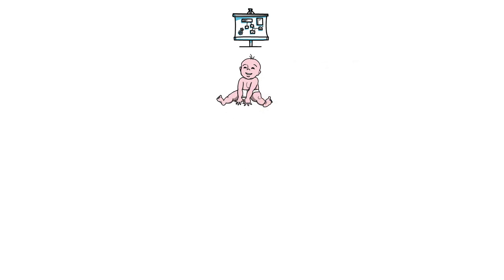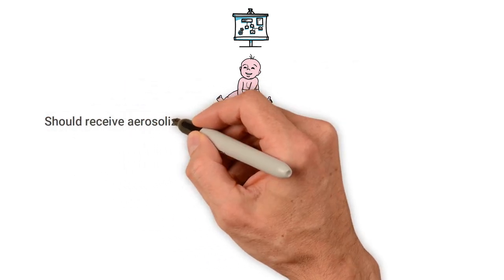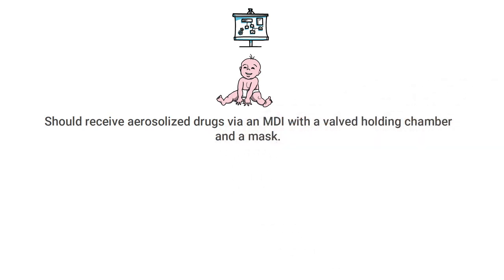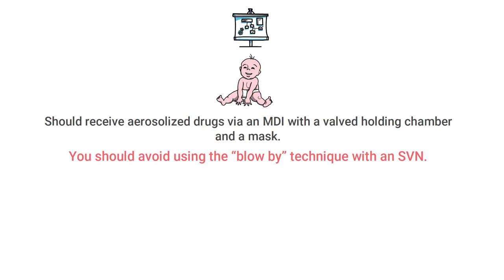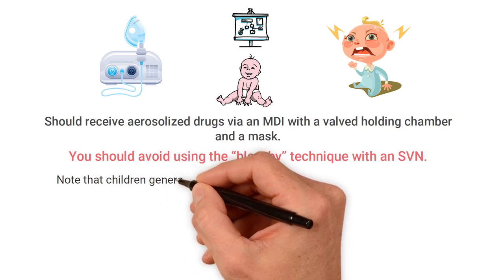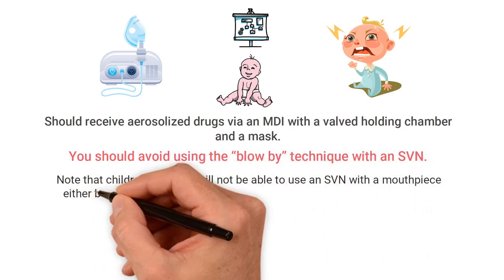In general, most infants and small children should receive aerosolized drugs with an MDI with a valved holding chamber and a mask, which is usually a more effective delivery method compared to a small volume nebulizer. You should avoid the blow-by technique with an SVN because much of the medication is wasted. An SVN with a mask could be considered, but oftentimes small children will not tolerate the mask very well.